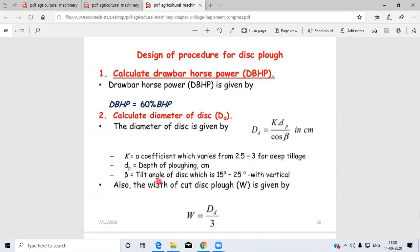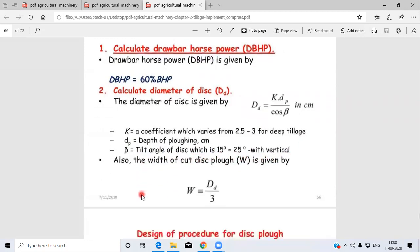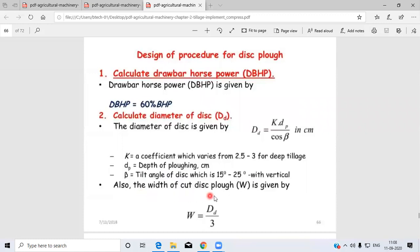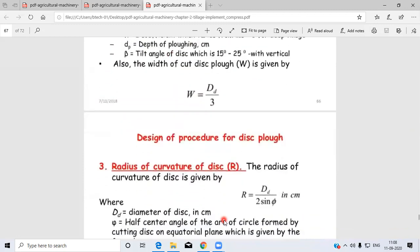dp is the depth of plowing in centimeters. β is the tilt angle of disc which is 15° to 25° with vertical. Also, the width of cut is given by W = Dd/3, where Dd is the diameter of disc.